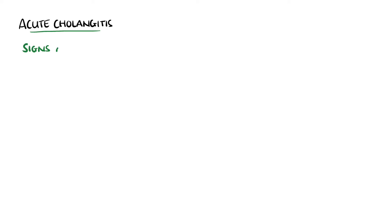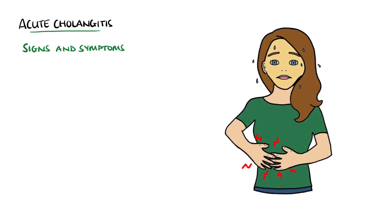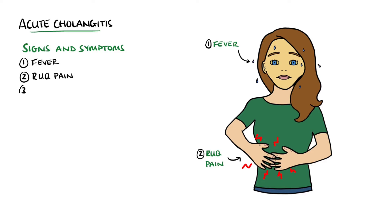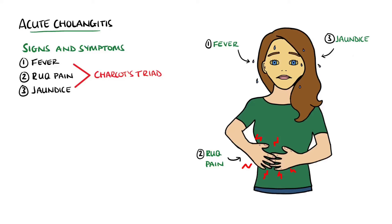In acute cholangitis, we may see a collection of signs and symptoms known as Charcot's triad, made up of fever, right upper quadrant pain, and jaundice. Jaundice is commonly found in cholangitis because there is a blockage of the common bile duct, meaning bilirubin builds up within the body. Due to the obstruction, there is raised pressure within the biliary system, which increases the risk of translocation into the bloodstream, generating biliary sepsis.